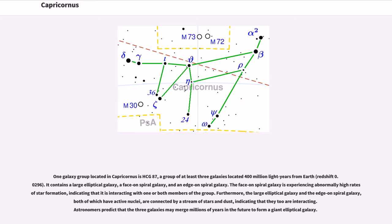One galaxy group located in Capricornus is HCG 87, a group of at least three galaxies located 400 million light-years from Earth, Redshift 0.0296. It contains a large elliptical galaxy, a face-on spiral galaxy, and an edge-on spiral galaxy. The face-on spiral galaxy is experiencing abnormally high rates of star formation, indicating that it is interacting with one or both members of the group. Furthermore, the large elliptical galaxy and the edge-on spiral galaxy, both of which have active nuclei, are connected by a stream of stars and dust, indicating that they too are interacting. Astronomers predict that the three galaxies may merge millions of years in the future to form a giant elliptical galaxy.